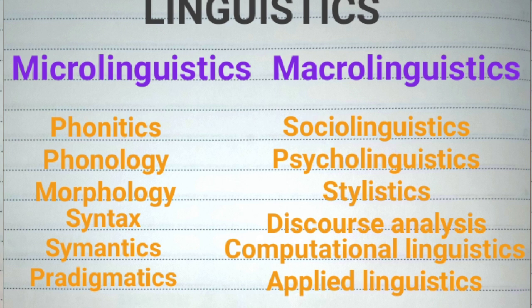Micro-linguistics, or sub-fields, includes phonetics, phonology, morphology, syntax, semantics, and pragmatics. Among macro-linguistics, or branches, we can mention sociolinguistics, psycholinguistics, stylistics, discourse analysis, computational linguistics, and applied linguistics.